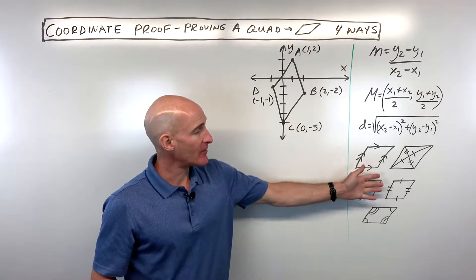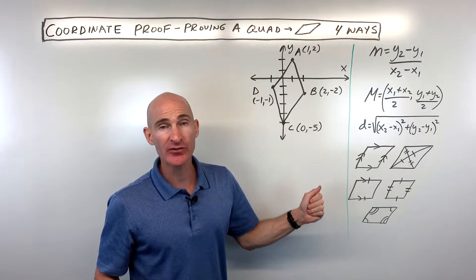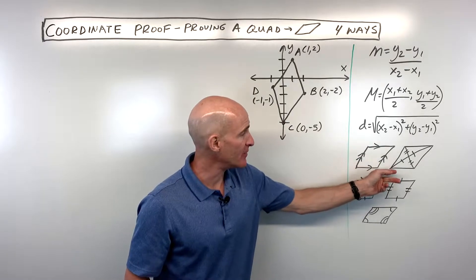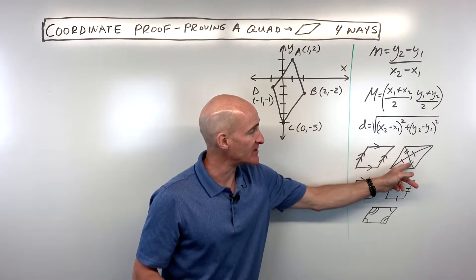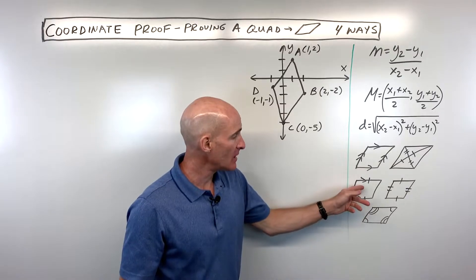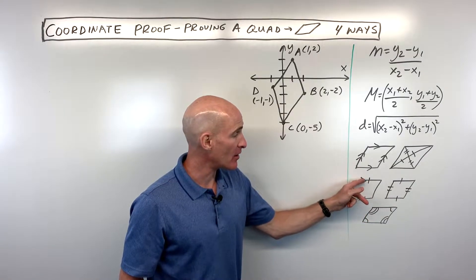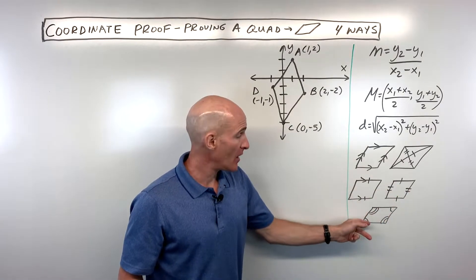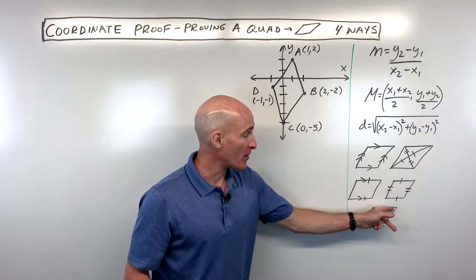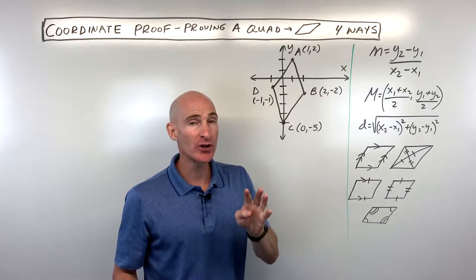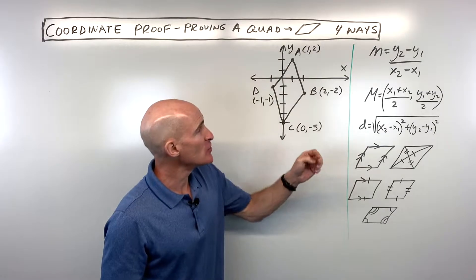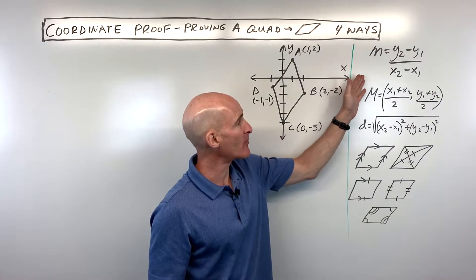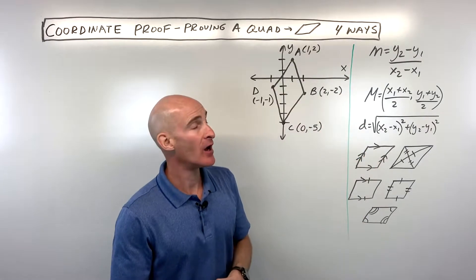There are five different ways that you can show that a quadrilateral is a parallelogram. You could show that both pairs of opposite sides are parallel — that's the definition. You could show that the diagonals bisect each other, that one pair of opposite sides is parallel and congruent, that both pairs of opposite sides are congruent, or that both pairs of opposite angles are congruent. We're going to do four of these techniques using the slope formula, the midpoint formula, and the distance formula, so you might want to memorize and write these down.